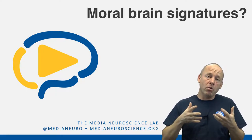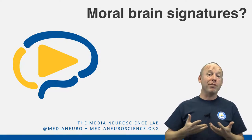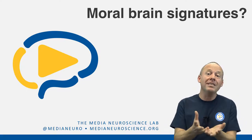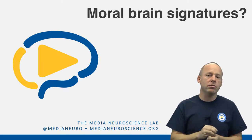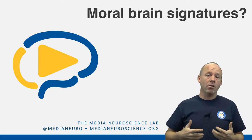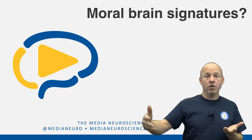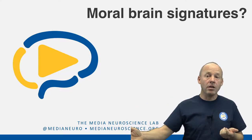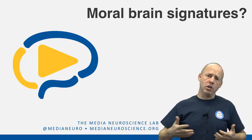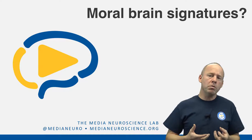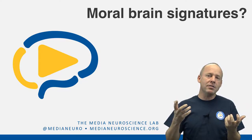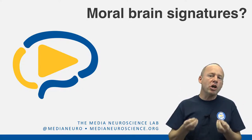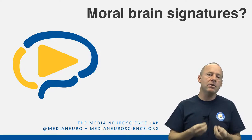If these moral information foundations or domains are motivation-relevant, they should leave a trace in our biology in how we process them. For example, if it indeed is true that we evaluate moral information along those foundations — fairness, authority, purity or sanctity, harm, and loyalty — we would expect that these different domains are processed in some way differently in our biology and our brain. So the question is: are there dissociable networks that process this information differently?